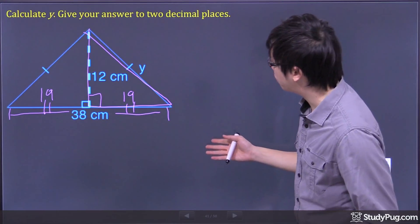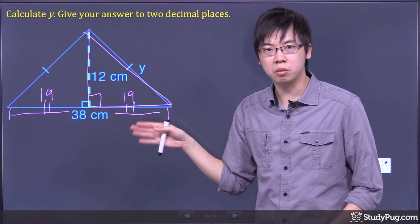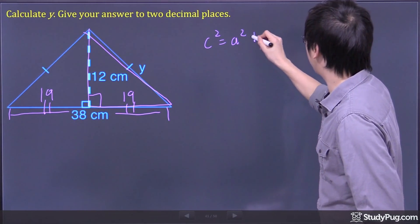So once we have those informations ready, we can figure out the Y now. Why? We got ourselves a right triangle, so you can use the Pythagorean theorem, right? We got C squared equals A squared plus B squared.